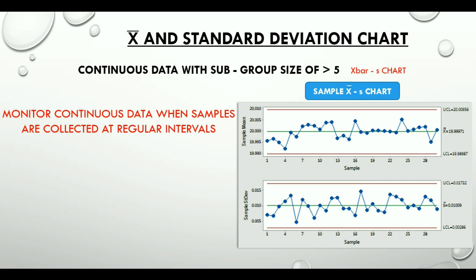X-bar s chart is actually a pair of charts. X-bar chart at the top plots the process mean, and the bottom chart plots process standard deviation, which is the s chart.